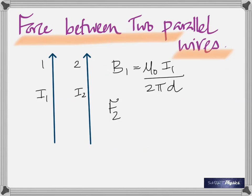So if the currents are flowing in the same direction, they attract each other. If the currents flow in opposite directions, they repel each other. Two parallel currents attract; anti-parallel currents repel. Now let's get the formula for the force between them. By Newton's third law, the force exerted by one on two equals the force exerted by two on one. The force is F = μ₀I₁I₂L divided by 2πD.